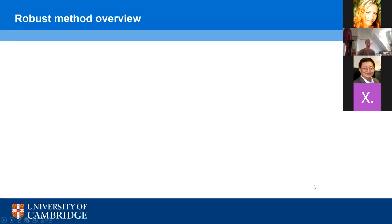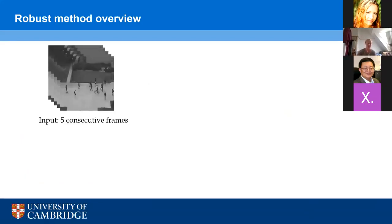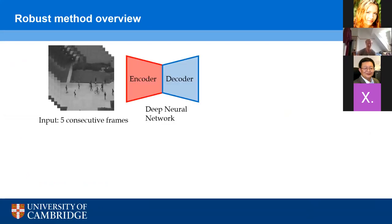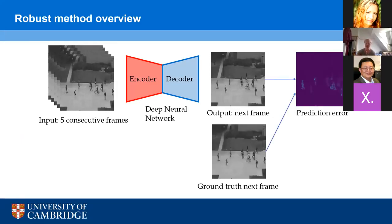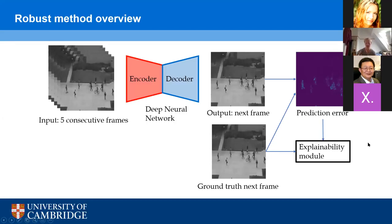To address those shortcomings, I developed a second, more robust method that takes an input of five consecutive frames and passes them through a deep neural network that is trained to predict the future next frame. This network is trained on normal events only, and then in testing we can compare the output to the ground truth next frame to form a saliency map of per-pixel prediction error, which can then be used to detect anomalies. We assume that by training the neural network only on normal events, it will make bigger mistakes when it tries to predict abnormal events, and this prediction error can be a signal to detect anomalies. I then plug the saliency map and the ground truth next frame into an explainability module.